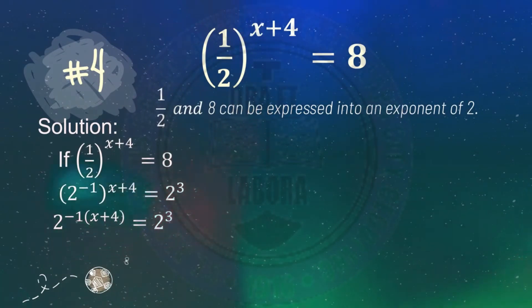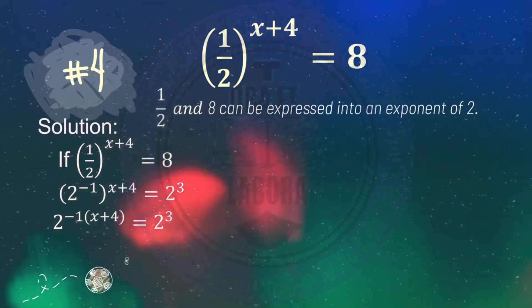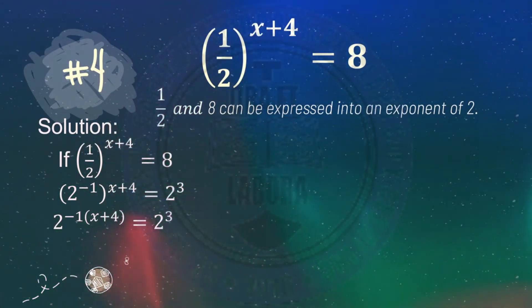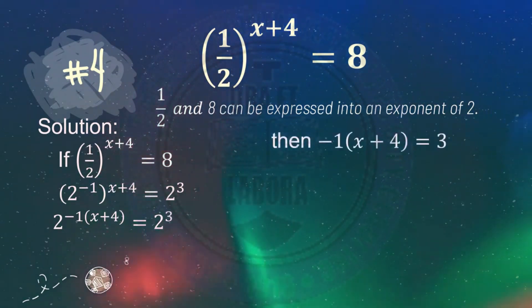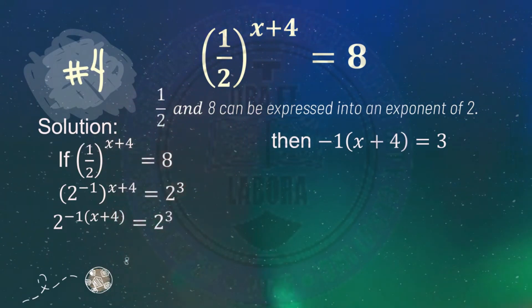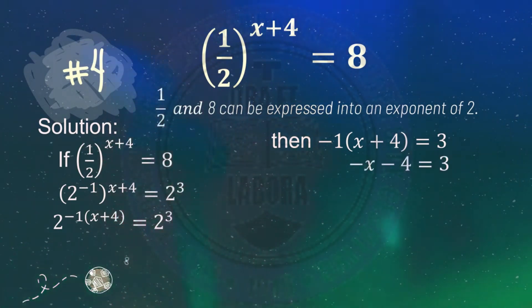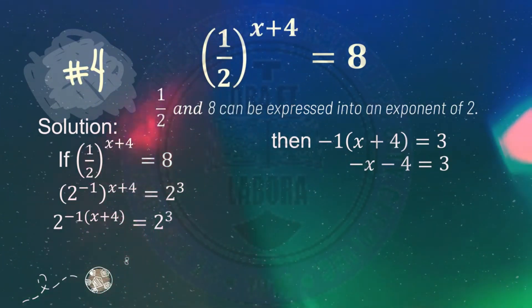Simplifying, we get 2 raised to negative 1 times quantity x plus 4 equals 2 cubed. Since both share the same base, we set the exponents equal: negative 1 times x plus 4 equals 3. Distributing negative 1 to x plus 4 gives negative x minus 4.